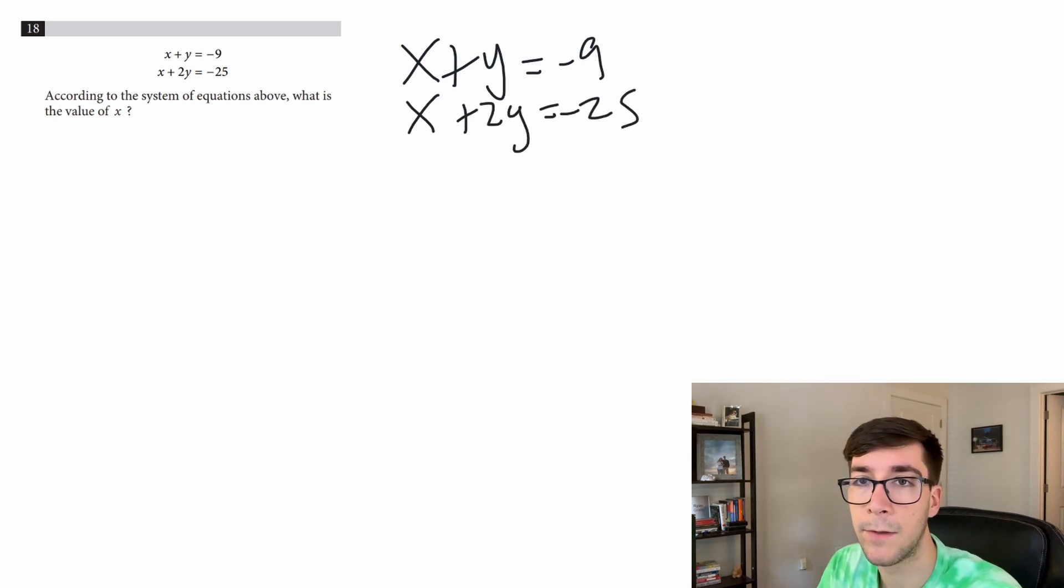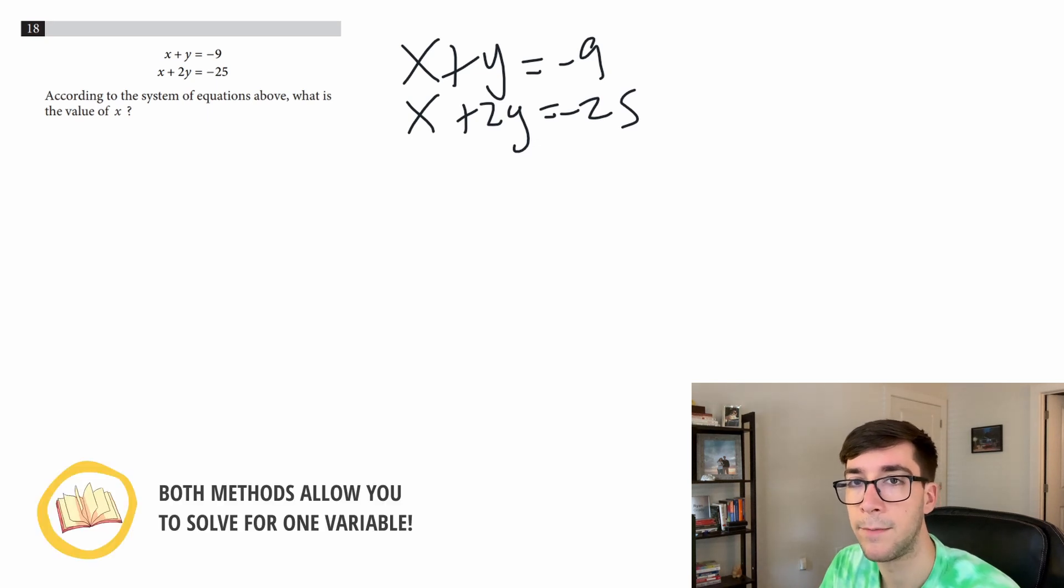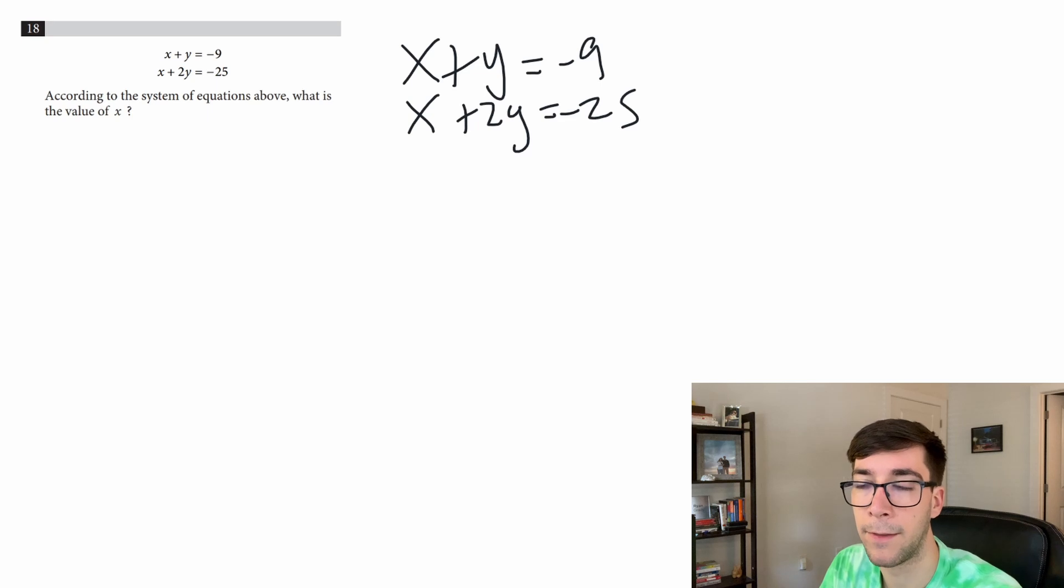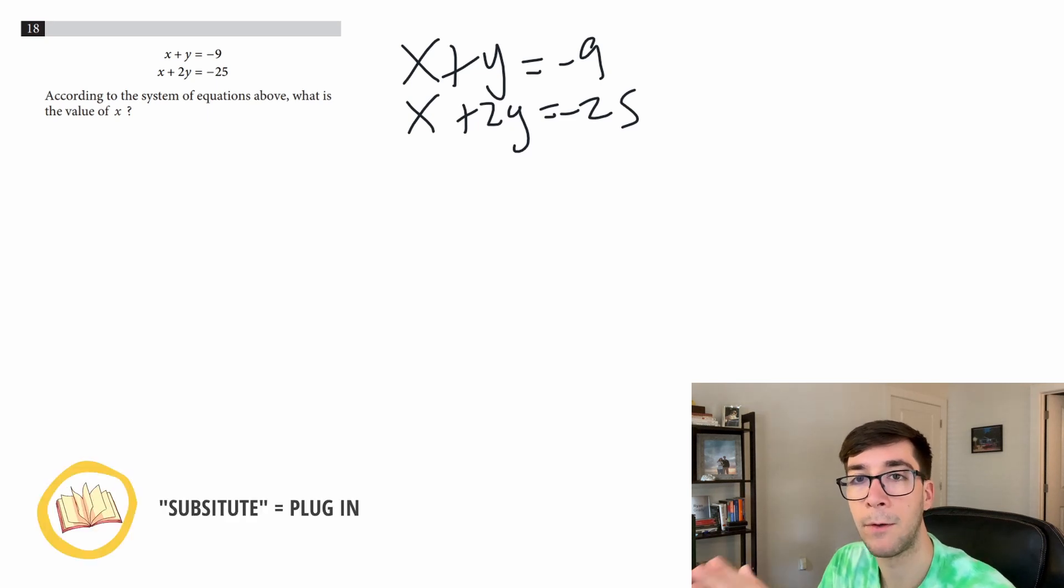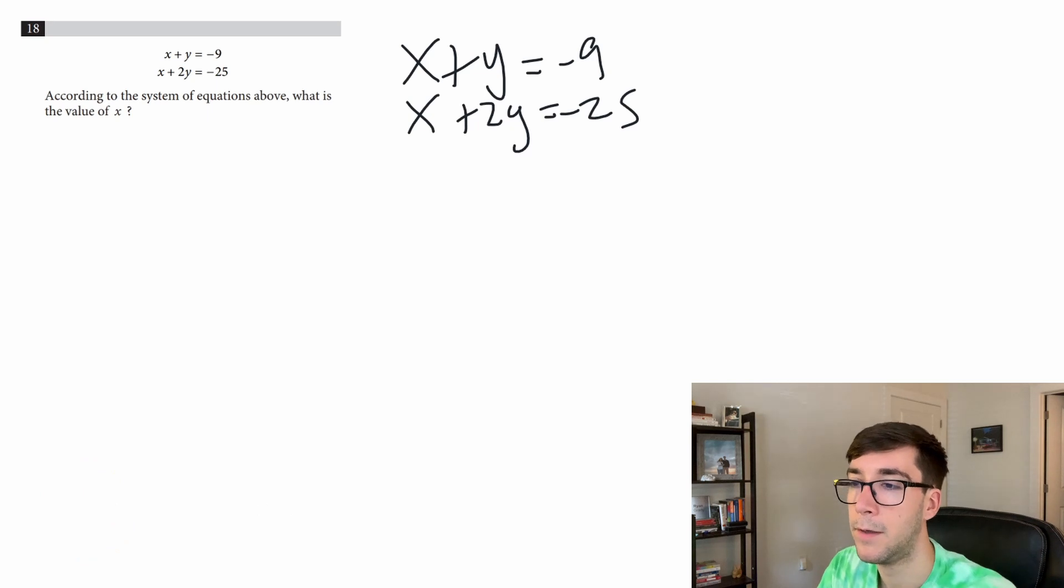Now there are two ways we can solve this: there's elimination and substitution. Substitution can often be more direct so I'm going to start with that. The idea of substitution is we have two variables here but we want to substitute one variable in for another so that way there's only one variable and we can solve directly for the variable we're looking for. So we're looking for x, meaning we want to somehow get rid of the y.